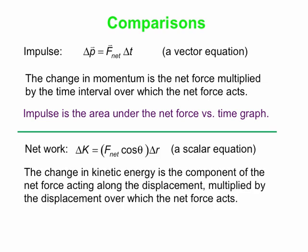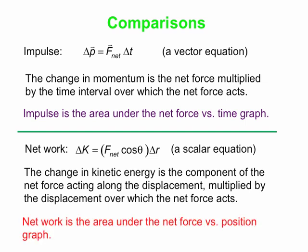Here's that equation explained in words: the change in kinetic energy is equal to the component of the net force that acts along the displacement, multiplied by the displacement over which the net force acts. The theta in the equation as cosθ is the angle between the net force and the displacement. Delta R is the displacement, F_net is the net force — they may be at some angle with respect to each other. And the net work turns out to be the area under a net force versus position graph.